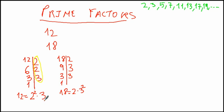So 12 is equal to 2 to the power of 2 multiplied by 3, and 18 is equal to 2 multiplied by 3 to the power of 2.